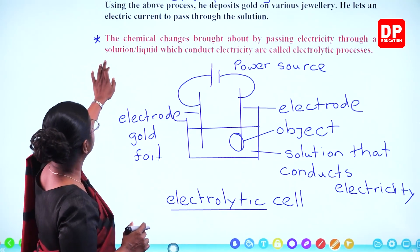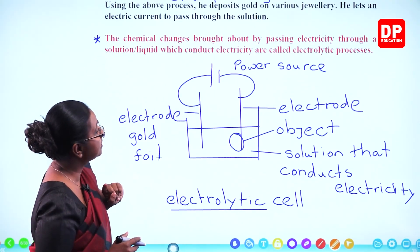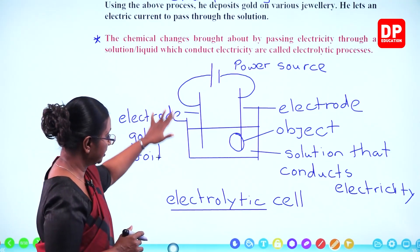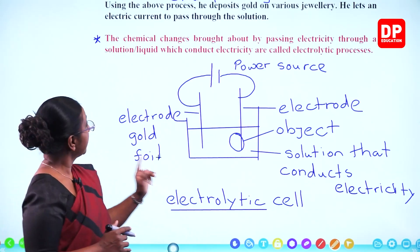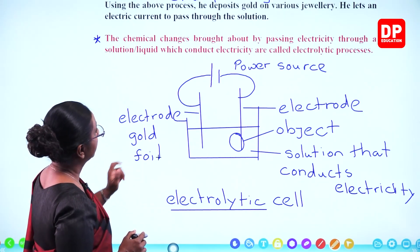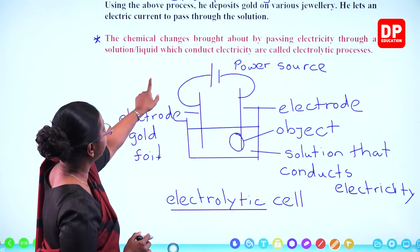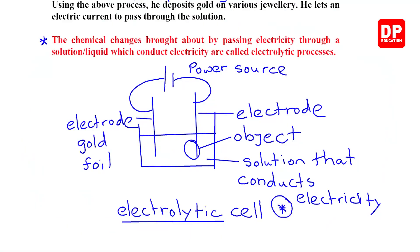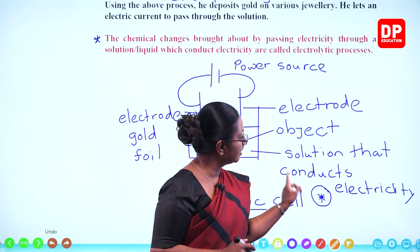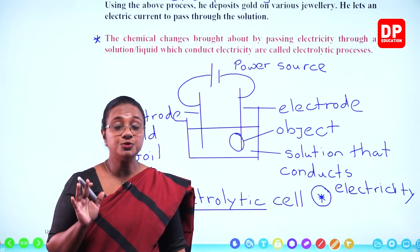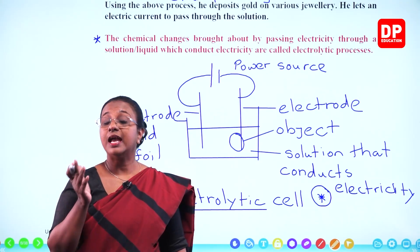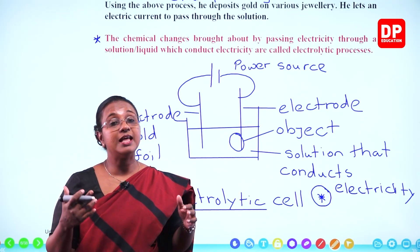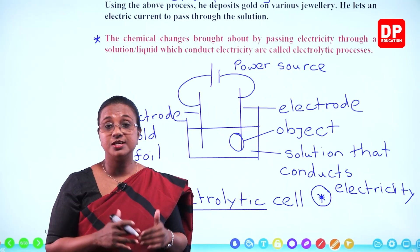The chemical changes brought about by passing electricity through a solution or liquid which conduct electricity are called electrolytic processes. By passing electricity through a solution or liquid which conducts electricity, we can bring about these changes. So you should know the solutions that conduct electricity — it can be a liquid or a solution. In the next slide, we will discuss an activity carried out to identify liquids and solutions that conduct electricity.